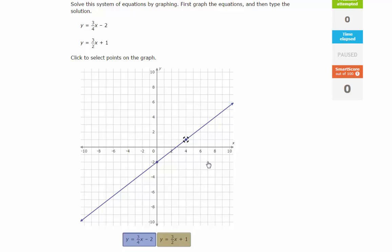I'm going to switch over to the other equation, y equals three-halves x plus one. I'm going to start at my y-intercept, which is positive one, so I'm going to go to positive one on the y-axis.